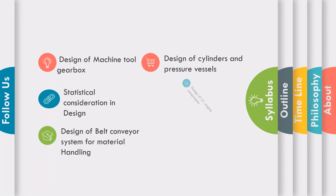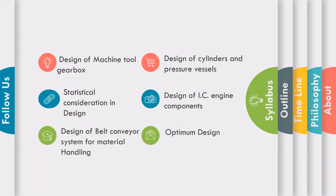Before starting our new subject Mechanical System Design, let us understand that Mechanical System Design and Machine Design are two different streams of engineering. In Machine Design, we design separate parts of the system. But in Mechanical System Design, we work on the collaboration of all these parts and check for the reliability of the system when different components are working together.